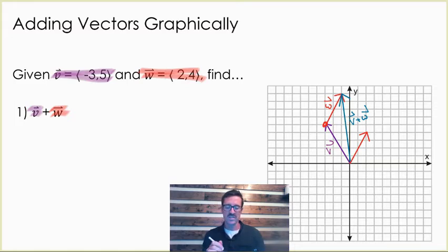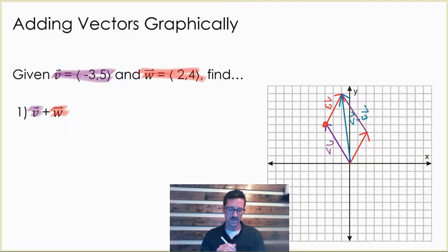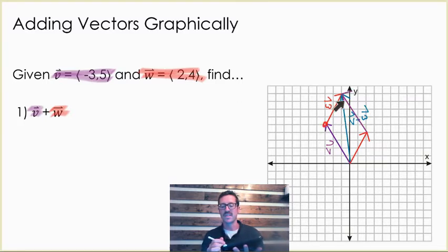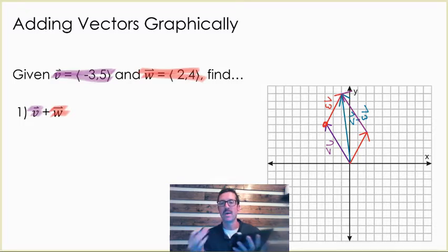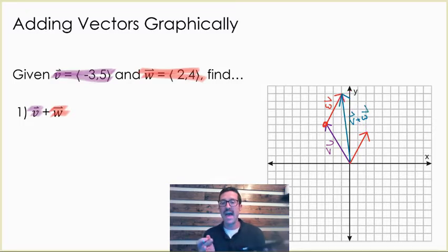One way you'll see people teach this is by creating a parallelogram with your vectors. If you took vector V and copied it, you would create a parallelogram with the two vectors, and your resultant vector is going to be the diagonal of that parallelogram. You might see it explained that way sometimes, but that's how you add vectors graphically.